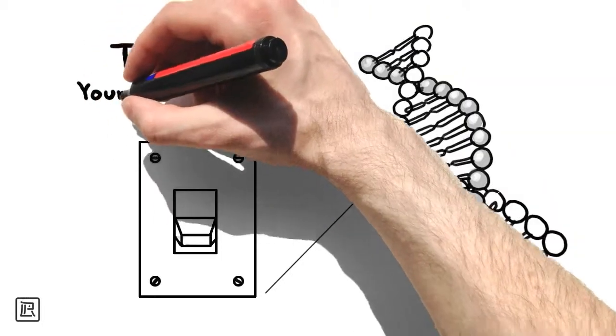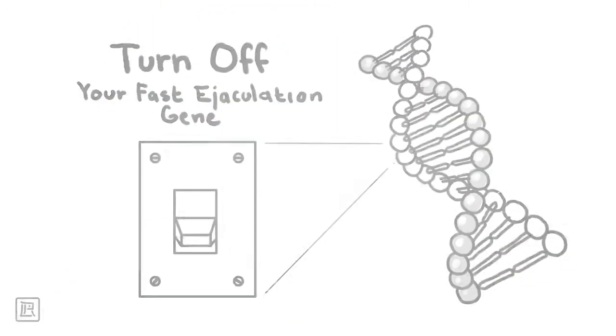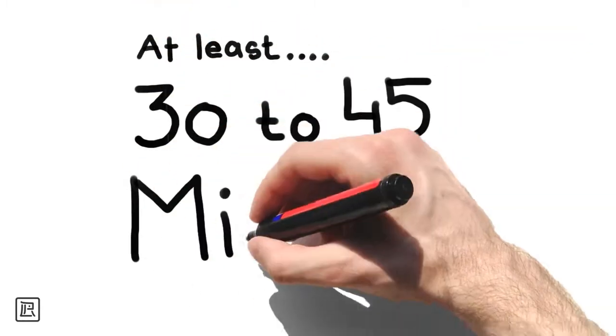In the next few minutes, you'll learn how you can turn off your fast ejaculator gene so you can last at least 30 to 45 minutes every night.